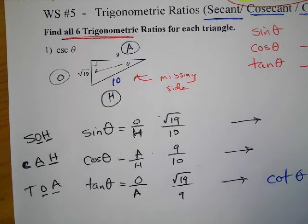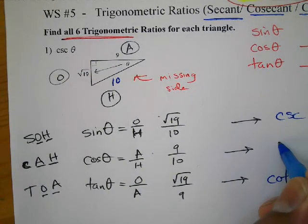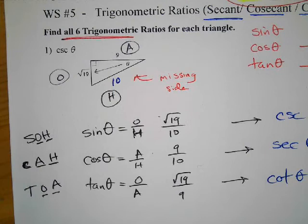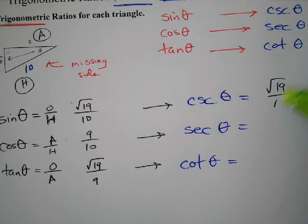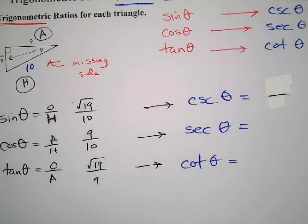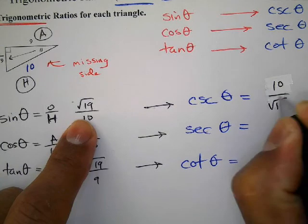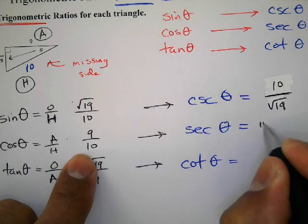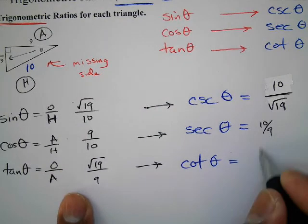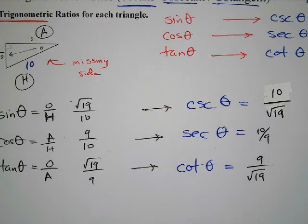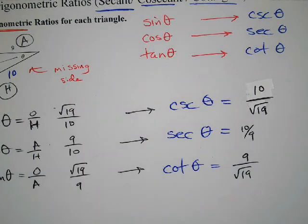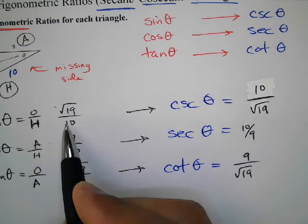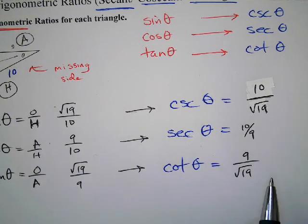Tangent pairs up with cotangent, sine with cosecant, and cosine with secant. So, that's the square root of 19 over, oh no, I didn't do the reciprocal. I'm over here writing the, copying the same thing. That's not right. I gotta do the reciprocal even. What's going on? That would be 10 over the square root of 19. That would be 10 over 9. And, that would be 9 over the square root of 19.